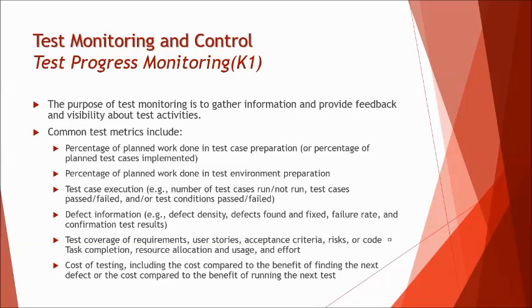Here is a typical list of test metrics that help measure different dimensions of testing. These include: percentage of planned work done in test case preparation, percentage of work done in test environment preparation — which helps gauge if the environment will be ready before execution — as well as test execution rate, defect information, test coverage of requirements, user stories, acceptance criteria, risk, code, task completion, and resource allocation.